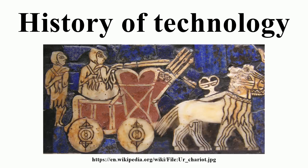Lensky's approach focuses on information. The more information and knowledge a given society has, the more advanced it is. He identifies four stages of human development based on advances in the history of communication. In the first stage, information is passed by genes. In the second, when humans gain sentience, they can learn and pass information through experience. In the third, humans start using signs and develop logic. In the fourth, they can create symbols, develop language and writing. Advancements in communications technology translate into advancements in the economic system, political system, distribution of wealth, social inequality, and other spheres of social life.